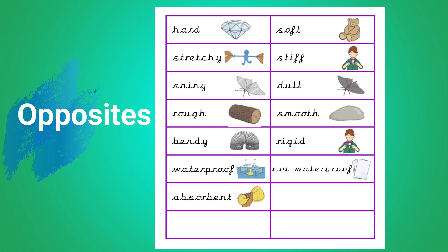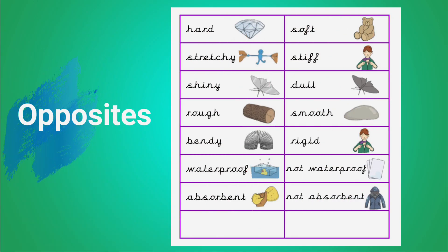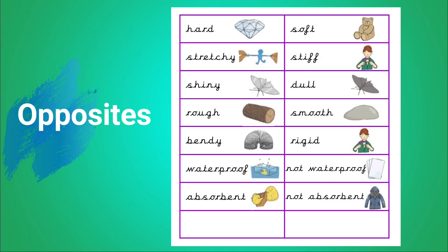Absorbent. Like a sponge that soaks up the water. The opposite of absorbent is non-absorbent. Like a raincoat.